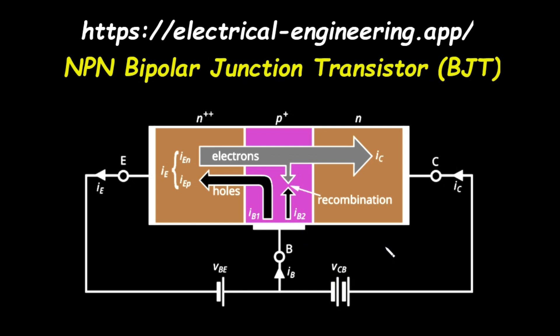The action starts at the forward biased base-emitter junction. Because the energy barrier is lowered, charge carriers begin to diffuse across the junction. Since the emitter is an N-double-plus region, packed with electrons, and the base is a P-plus region, filled with holes, two things happen simultaneously.